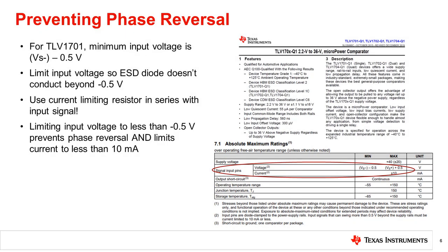The TOV1701 is a comparator that includes this low side ESD diode feature. The TOV1701 is a high voltage micropower comparator with an open collector output. The absolute maximum ratings table of this device states that the minimum input voltage allowed is 0.5 volts below the VS minus supply rail. Therefore, assuming that VS minus is 0 volts at ground, the input voltage needs to be limited so that the ESD diode doesn't conduct beyond negative 0.5 volts.